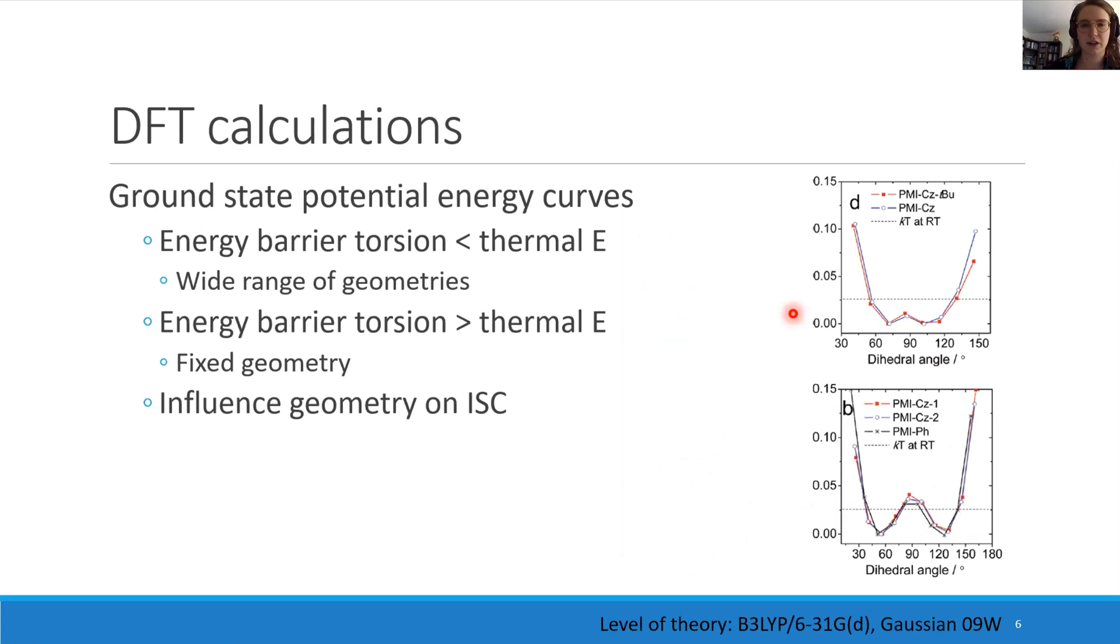They also wanted to study the influence of the geometry on the intersystem crossing. They did calculations for the ground state potential energy curves of the dyads, of the torsion about the linker. At room temperature, the dihedral angle between the donor and acceptor isn't strictly perpendicular in these cases. For the CN-linked dyads, the torsion barrier is lower than the barrier for thermal energy at room temperature, which results in a wide range of geometries that can be adopted.